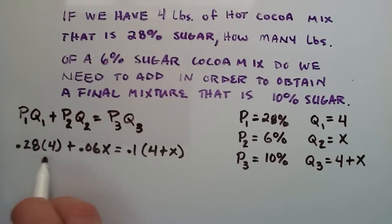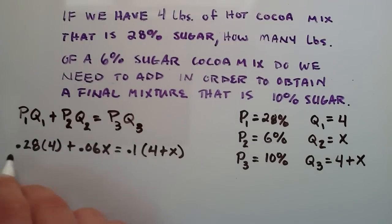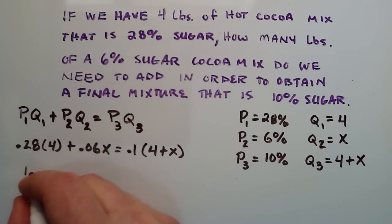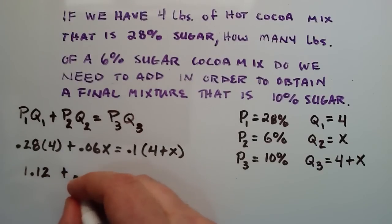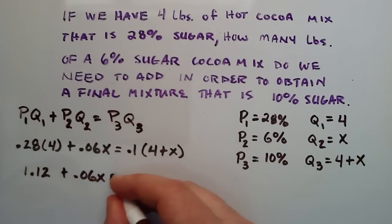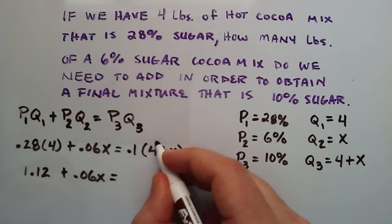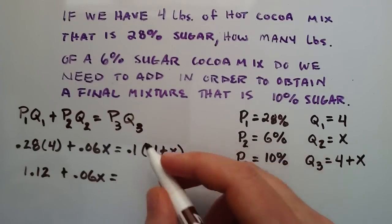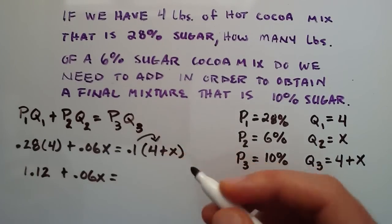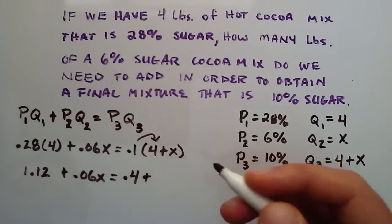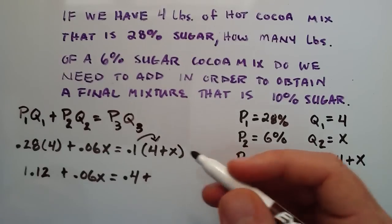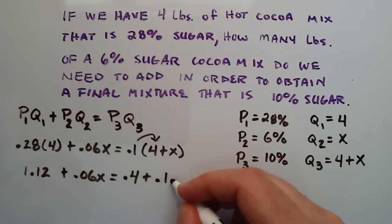Now we've got a nice equation to solve. Let's solve for X. 0.28 times 4 gives us 1.12, and we add that to 0.06X. That equals 0.1 distributed into the parentheses: 0.1 times 4 is 0.4, plus 0.1 times X is 0.1X.